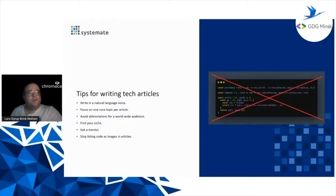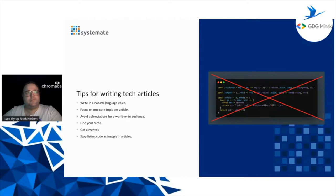I have a few tips for writing. First, write in a natural language voice — don't try to make it an academic paper. People's attention spans are very short and they'll leave if reading feels tiring. Focus on just one core topic per article and remove everything else. Avoid abbreviations when writing for a worldwide audience — don't use 'e.g.' or 'i.e.'; write out 'for example' or 'that is' instead. People will find it easier to read, especially those mapping to a local language.